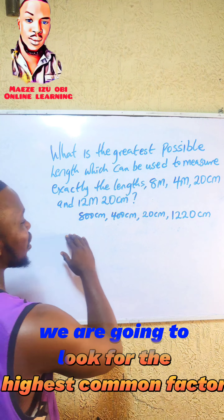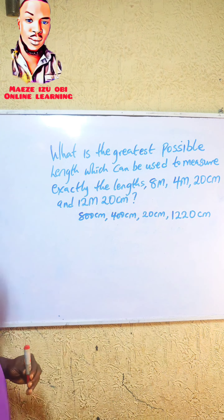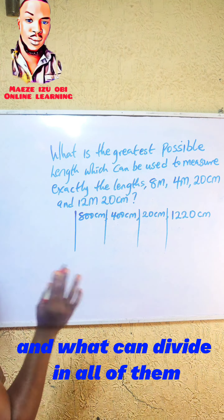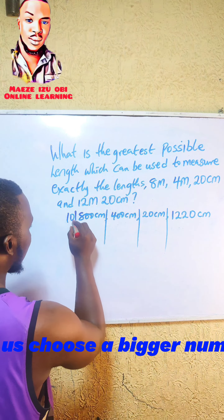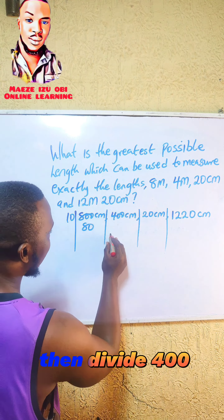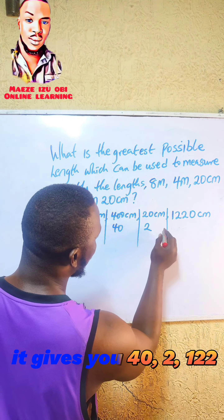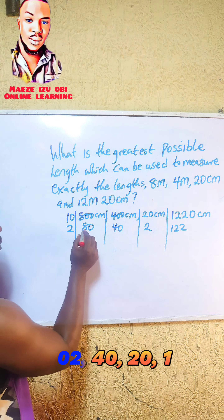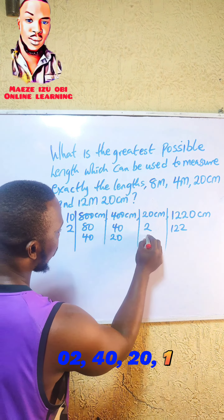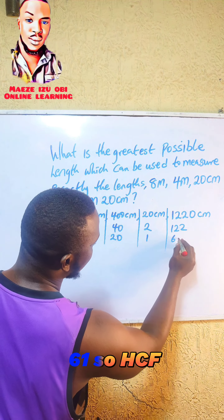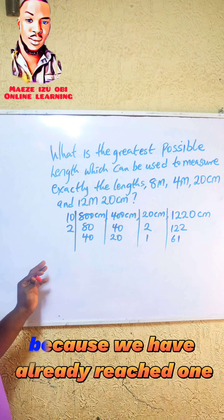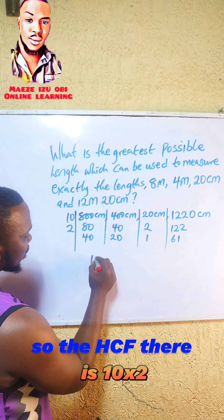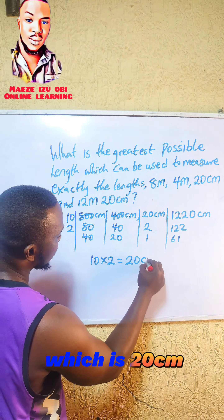We are going to find the highest common factor of all these values. We draw our line and find what can divide all of them. Using 10: 800 divided by 10 gives 80, 400 divided by 10 gives 40, 20 divided by 10 gives 2, and 1220 divided by 10 gives 122. Then dividing by 2: 40, 20, 1, 61. We stop when we reach 1. So the HCF is 10 times 2, which is 20 centimeters.